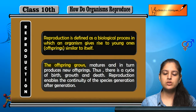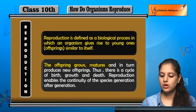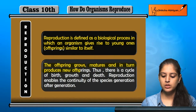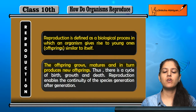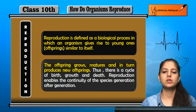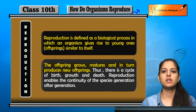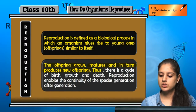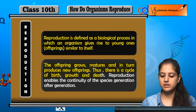Yeh jo offspring hai, in turn mature hota hai, grow hota hai. Ek organism se pehle new offspring hote hain. Woh offspring — uski growth hoi, maturity hoi, uske baad usne in turn aur offsprings ko produce kia. So, yeh ek cycle hai — this is a cycle of birth, growth and death.